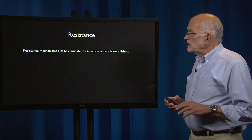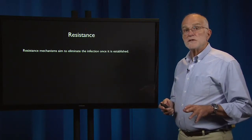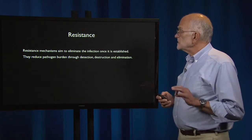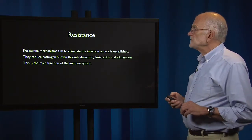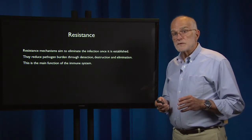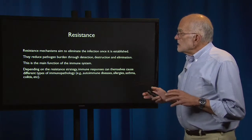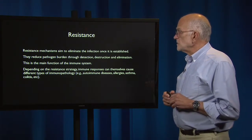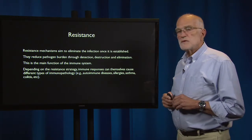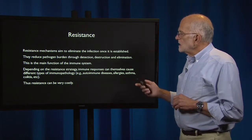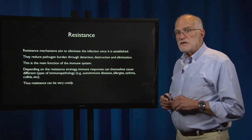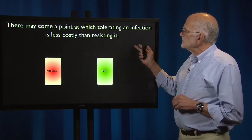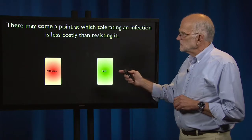Resistance mechanisms aim to eliminate the infection once it has been established. They reduce the pathogen burden by detecting, destroying, and eliminating the pathogen — that is the main function of the immune system. Depending on the resistance strategy, immune responses can themselves cause different kinds of immunopathology: autoimmune diseases, allergies, asthma, colitis, and so forth. So resistance can be very costly.